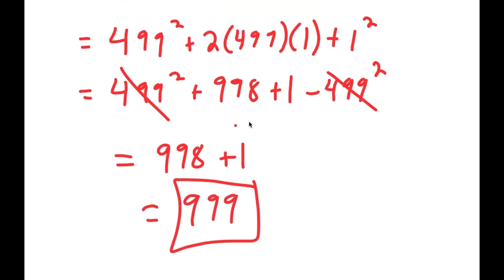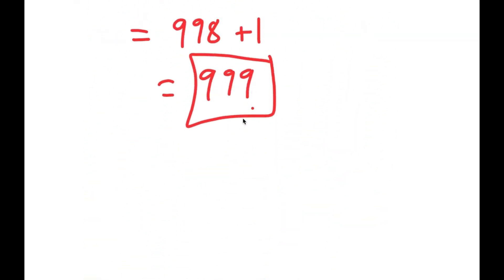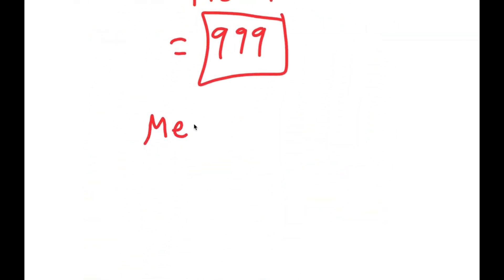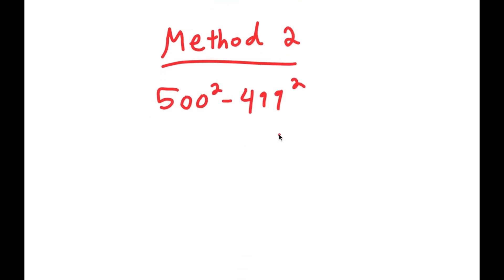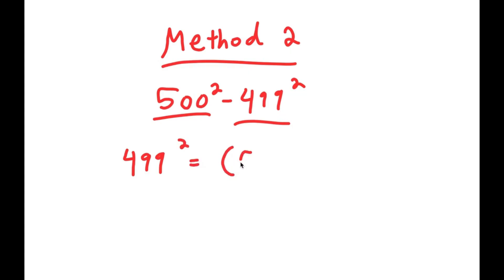That is the first method of solving this problem. Now for method 2, I'm going to rewrite my problem: 500 squared minus 499 squared. This time, instead of rewriting 500 squared, I'm going to rewrite 499 squared. So 499 squared is the same thing as 500 minus 1, squared.